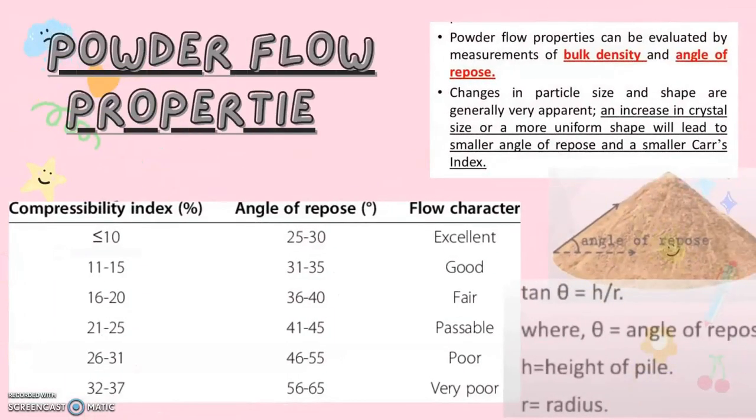Another physical property is powder flow property. Powder flow properties can be evaluated by measurements of two parameters: bulk density and angle of repose. Angle of repose is the steepest angle from the horizontal plane and the formula is tan theta equals h by r, where theta is the angle of repose, h is the height of pile and r is the radius of pile. Changes in particle size and shape are generally very apparent and increase in crystal size or a more uniform shape will lead to smaller angle of repose and a smaller Carr's index.